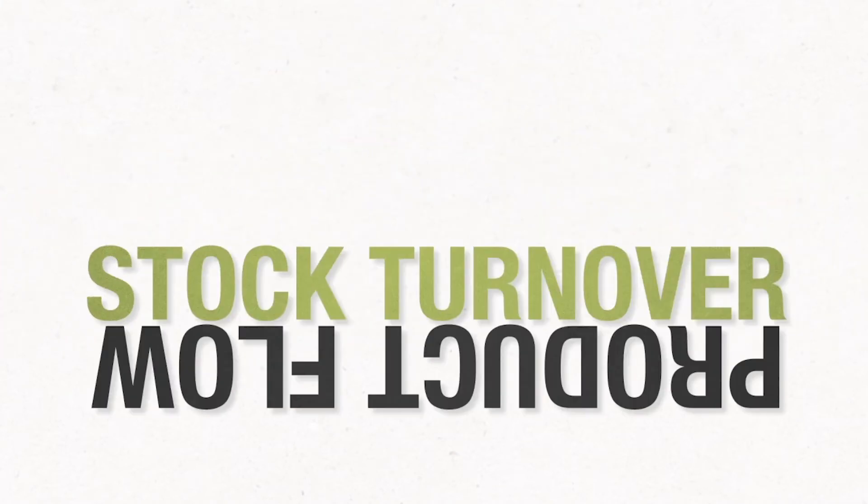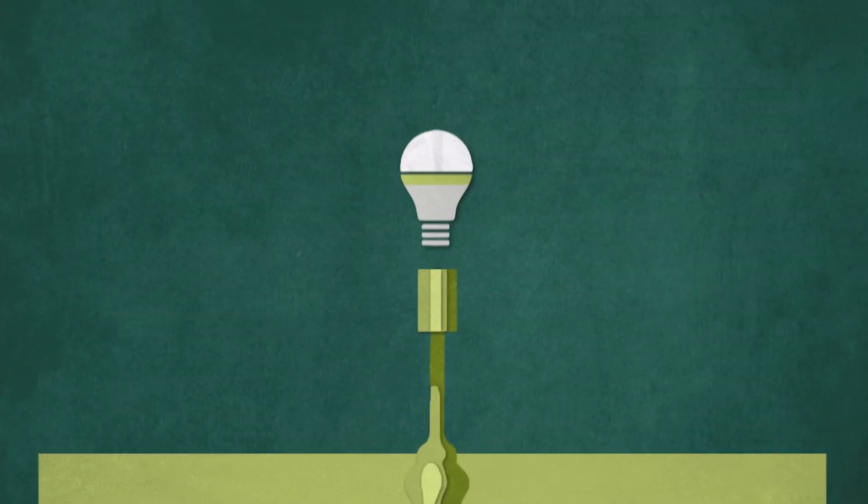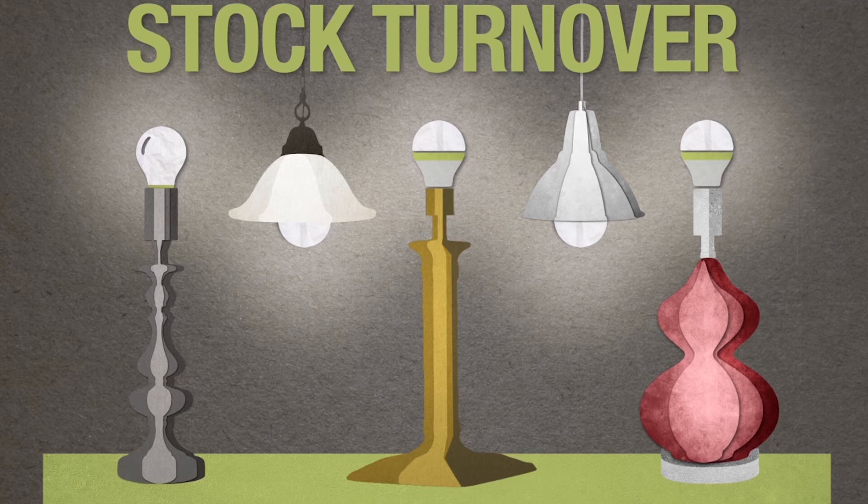Product flow and stock turnover. Product flow is all of the new products sold and installed in the market. Stock is all of the currently installed products. Stock turnover is how the stock turns over, as older products wear out and new products are installed to replace them.